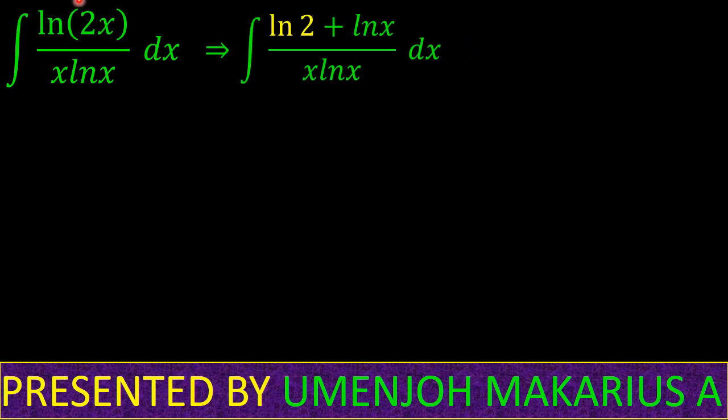a product is simply the sum of the individual functions. If we divide each term on top by the common denominator, we get natural log of 2 over x ln x, plus ln x over x ln x, which simplifies to